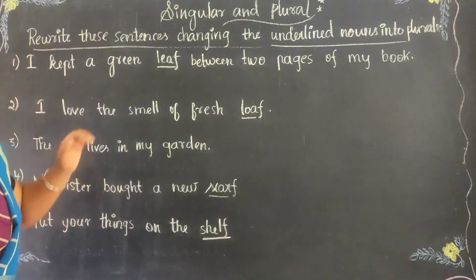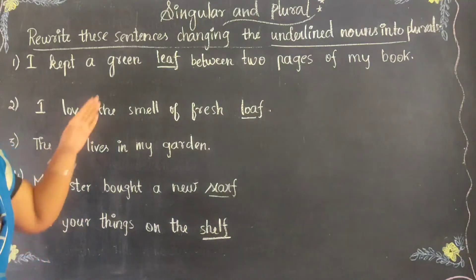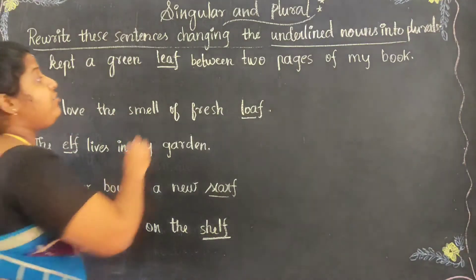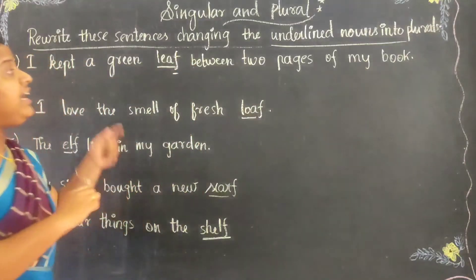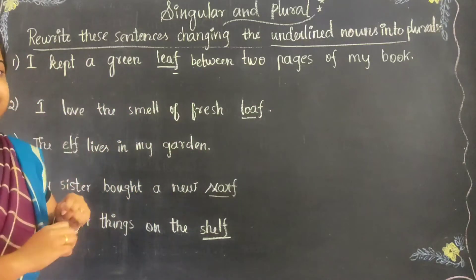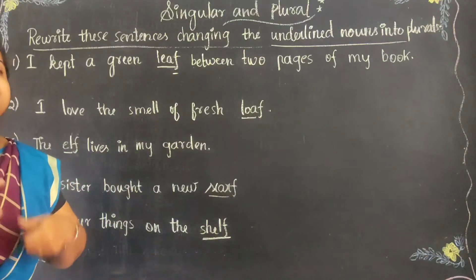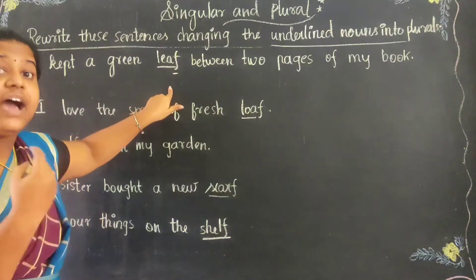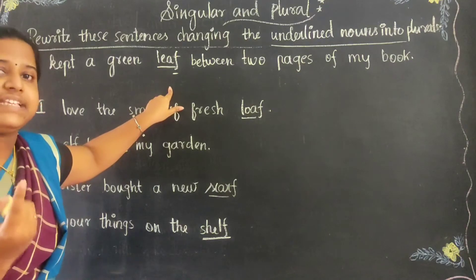So here, which is the underlined word? Leaf is the underlined word. So we have to check the last letter. The word is L-E-A-F. The word ends with F. So what do we have to do? We have to drop this F and then we have to add V-E-S.